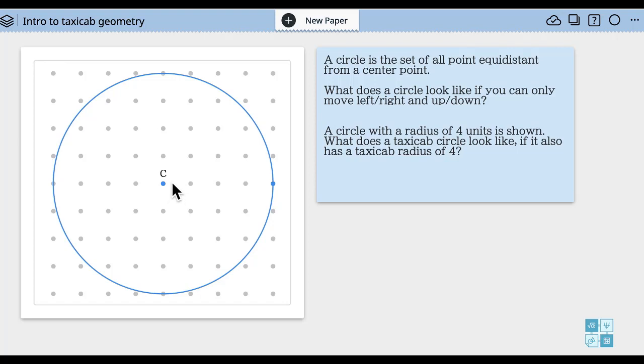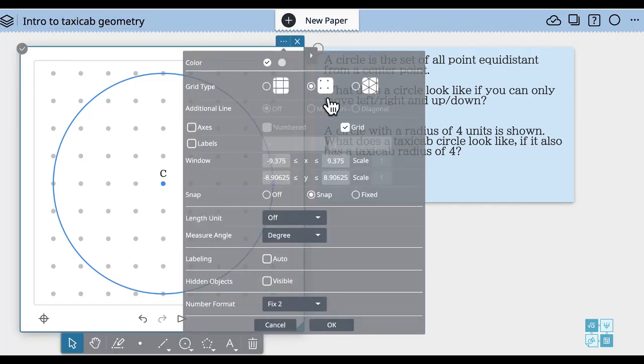But this time you can only travel left, right, up, or down. So what I've got here is a geometry window. Geometry windows are set up in a special way—it's got grid paper with the grid turned on.